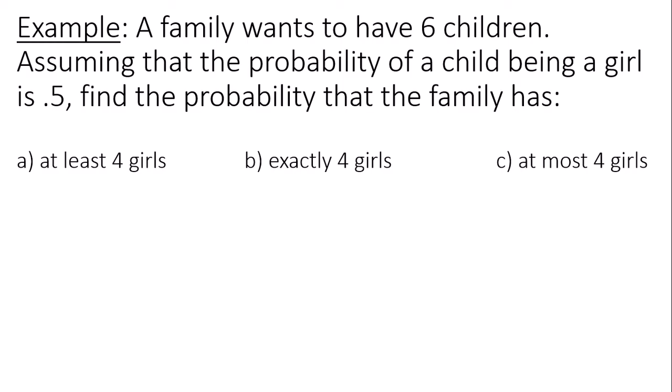find the probability that the family has at least four girls, so that would be greater than or equal to four, exactly four girls, so that's equal to four, and at most four girls, so that would have to be less than or equal to four.